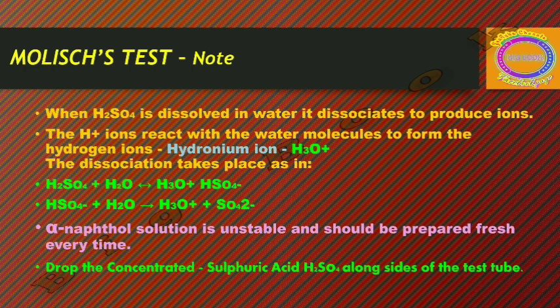Note: when H2SO4 is dissolved in water, it dissociates to produce ions. The H+ ions react with water molecules to form hydronium ions, H3O+. The dissociation proceeds as: H2SO4 + H2O → H3O+ + HSO4−, and then HSO4− → H3O+ + SO4²−. This is how H2SO4 dissociates to give H3O+ ions.